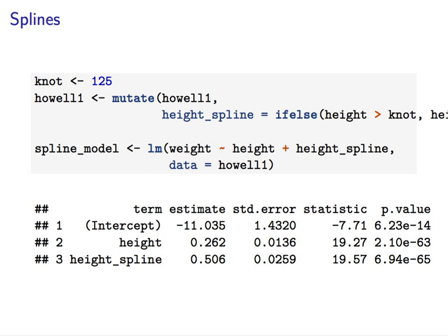So, here we have our model, and this runs off the edge, but if height is greater than 0, then we get height minus 125. Otherwise, we get 0. Here's our model, our results, here.